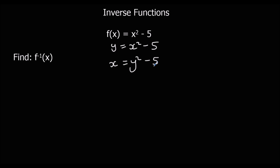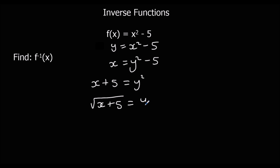Then we need to make y the subject again. I'm going to add 5 to both sides, and then square root both sides — to get rid of the square, you square root, which is the inverse operation. So my inverse function this time is the square root of x plus 5.